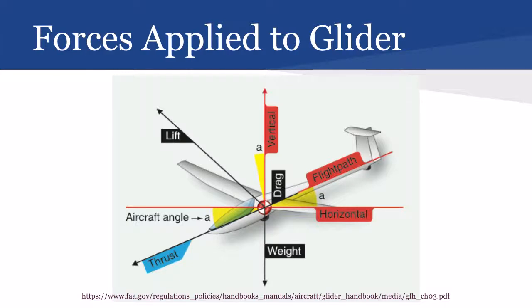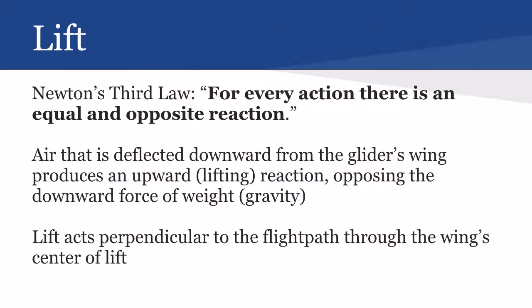Next, you can see that there is lift, which is perpendicular to the downward force of weight. This is pulling the glider upwards, giving it lift. Now, this is where we get into Newton's Third Law — and remember how the NGSS has alignment with all of the Science Olympiad events. Newton's Third Law is: for every action, there is an equal and opposite reaction. That's where we're getting into lift here.